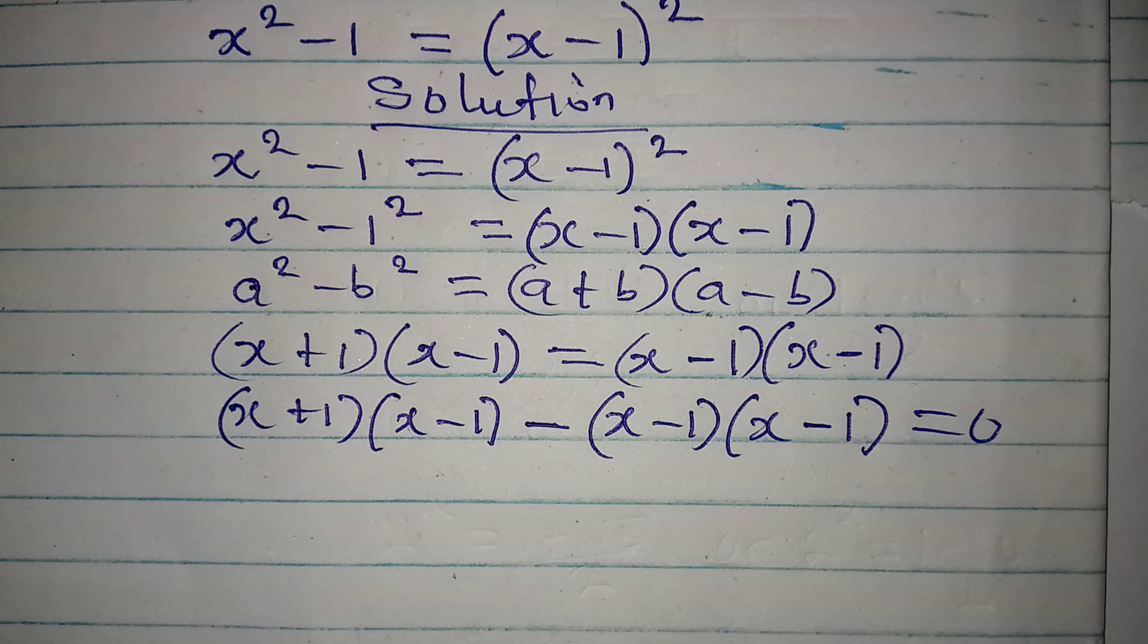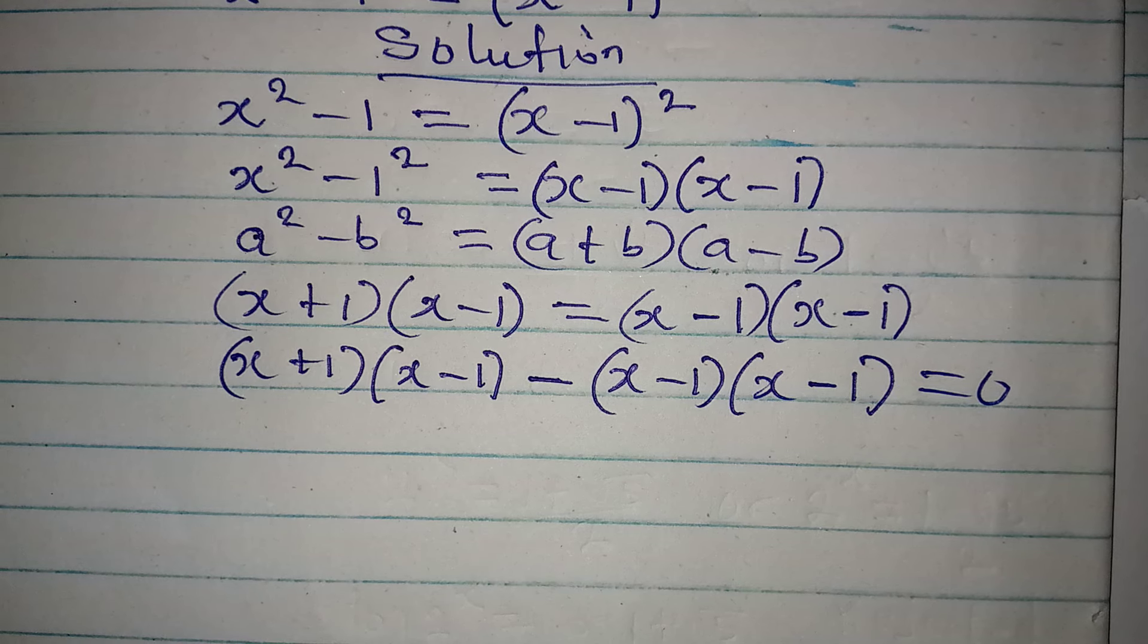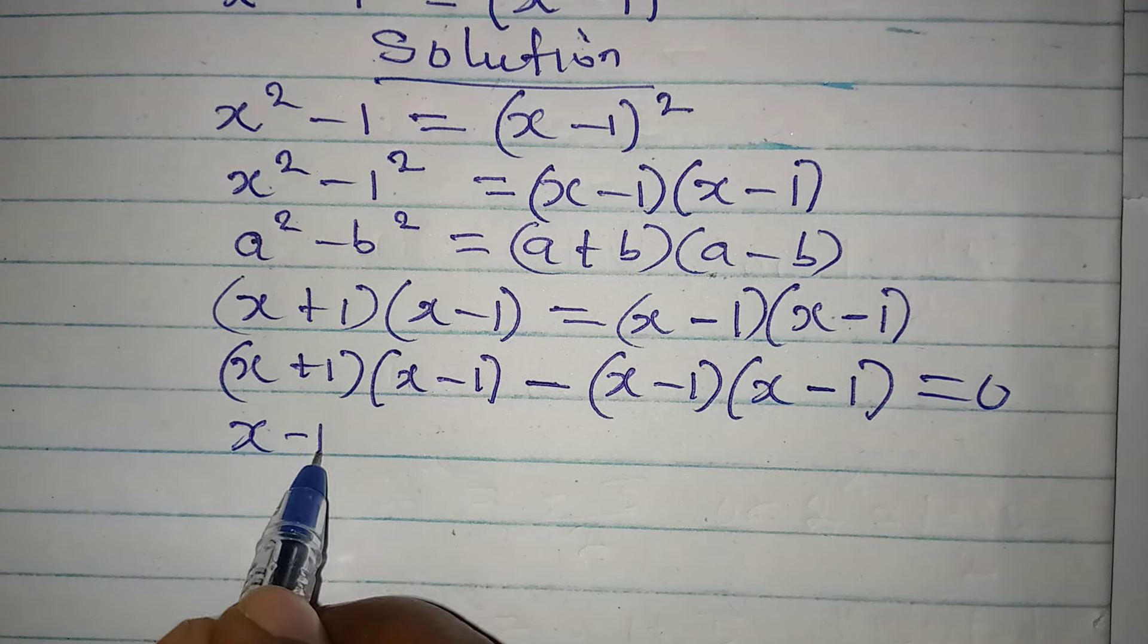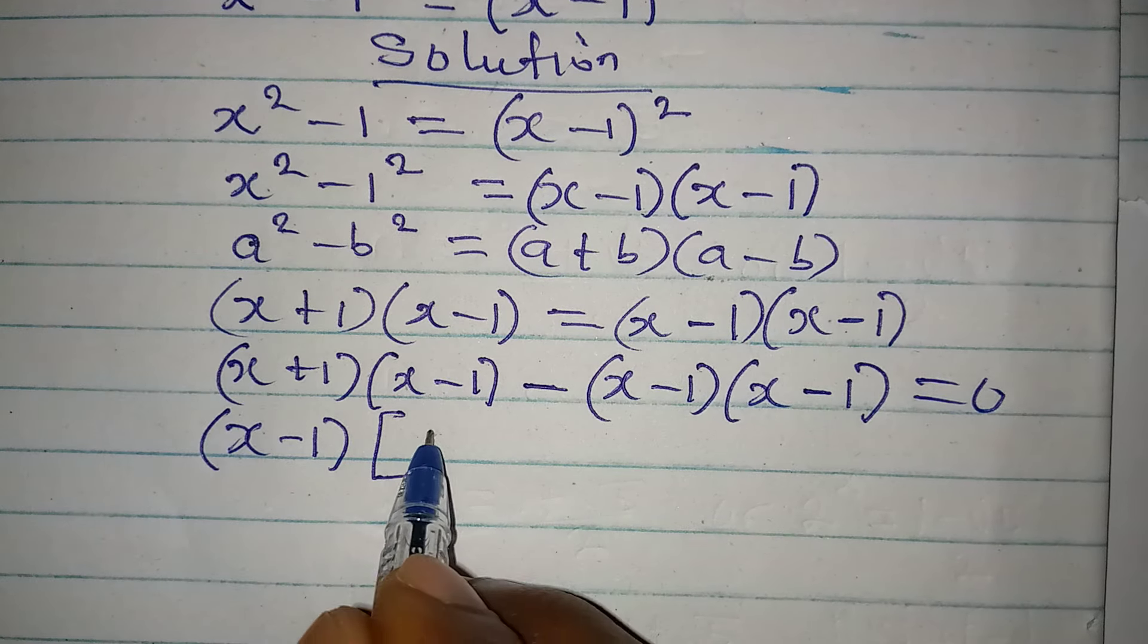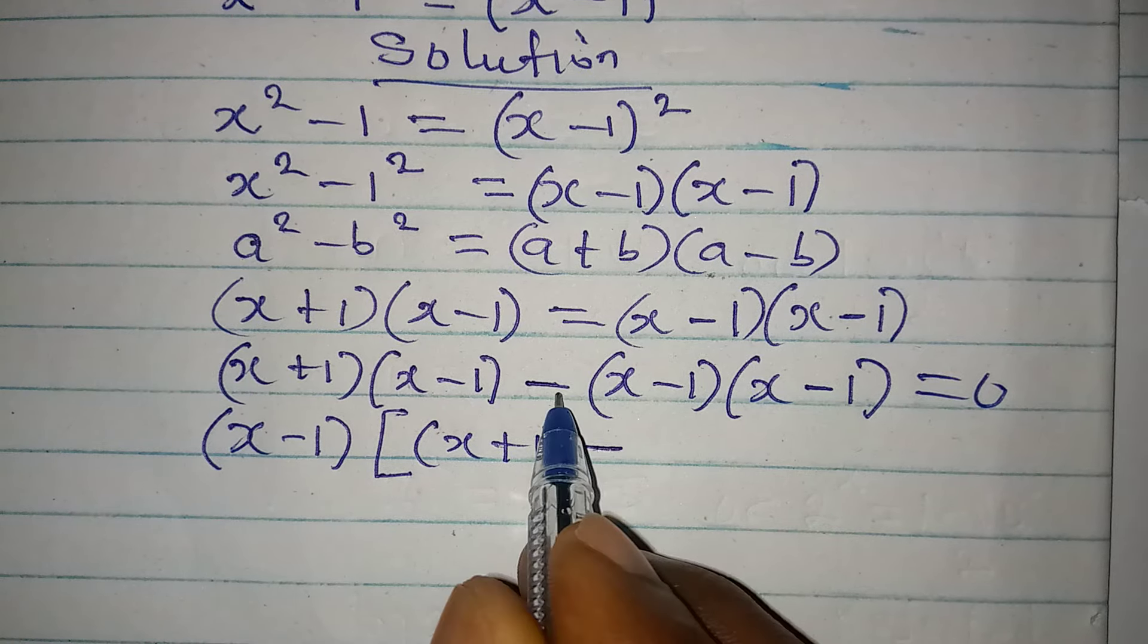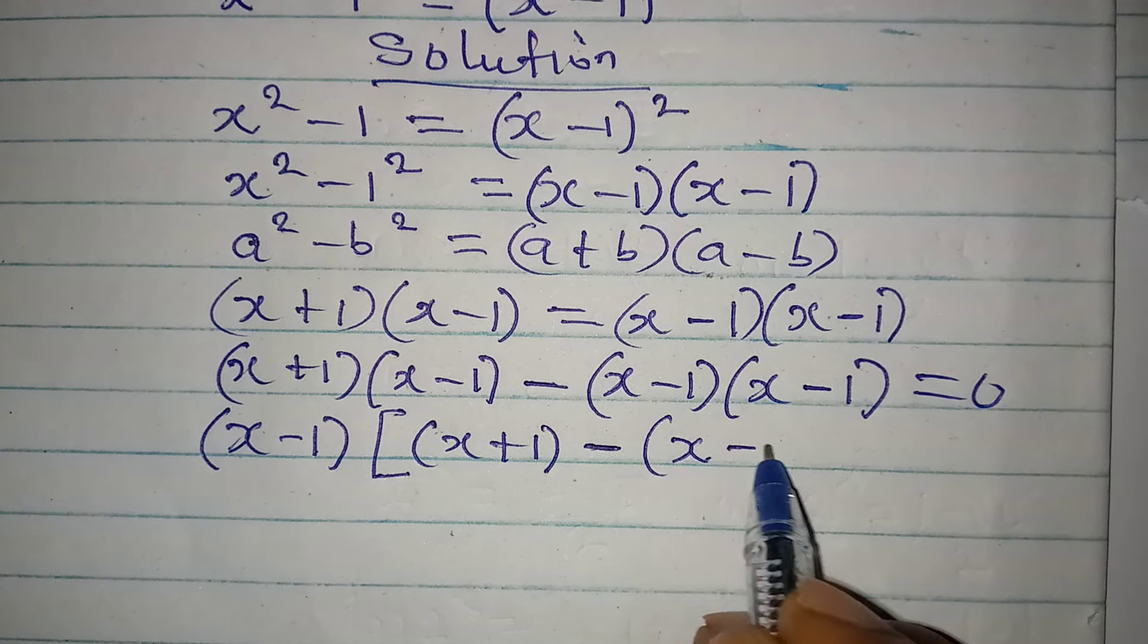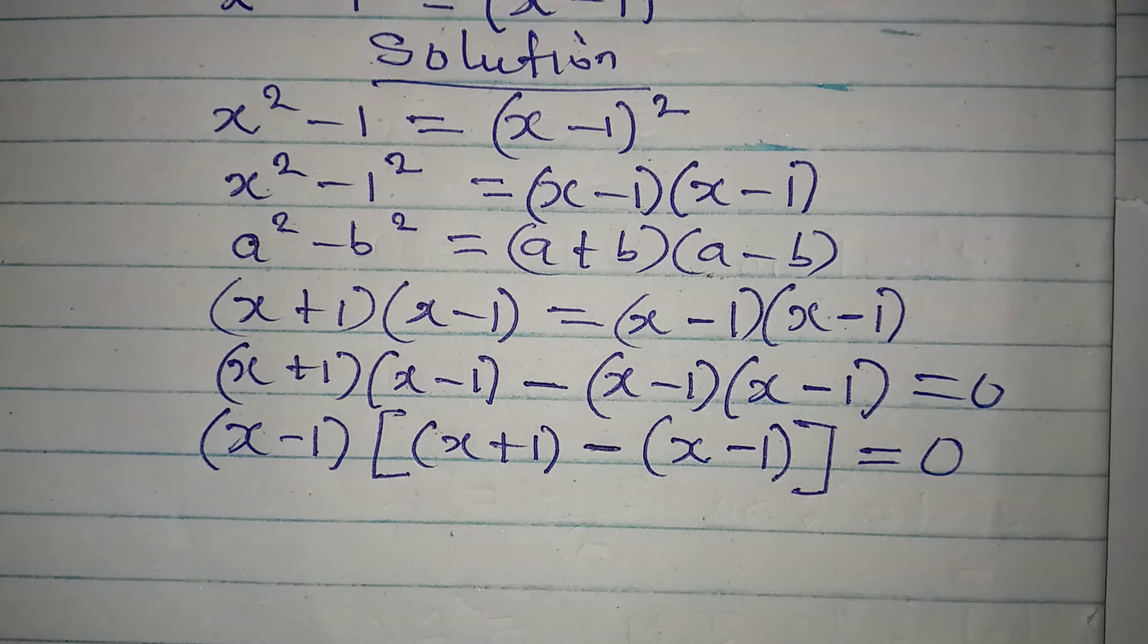What I did over there is to bring everything to the left-hand side. Now we factor out x minus 1 because it is common to these two. So x minus 1 comes out as a common factor. Then what I have here is x plus 1, then minus this negative. Then I have one of these, which will be x minus 1. Then close this. Everything equals 0.